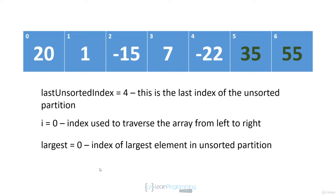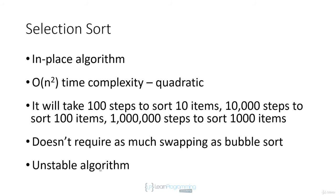We decrement the last unsorted index so it's now four. We reinitialize 'largest' to zero — i should be reinitialized to one — and we just repeat the process: compare one to twenty, 'largest' remains zero, and so on until the entire array is sorted. This is how selection sort works, and it's called selection sort because on each traversal we're selecting the largest element and moving it into the sorted partition.